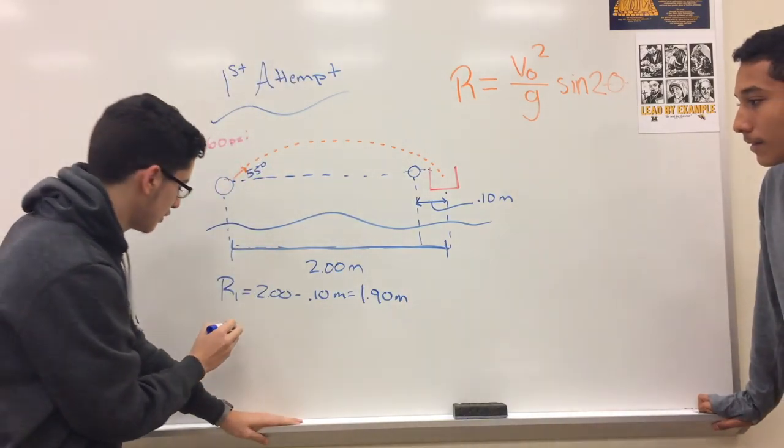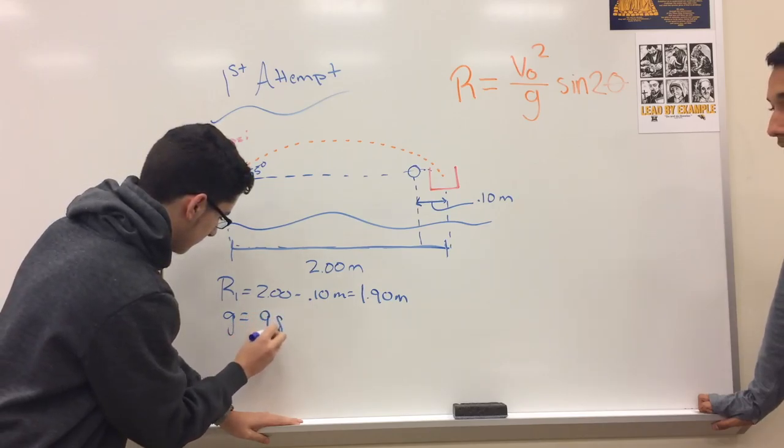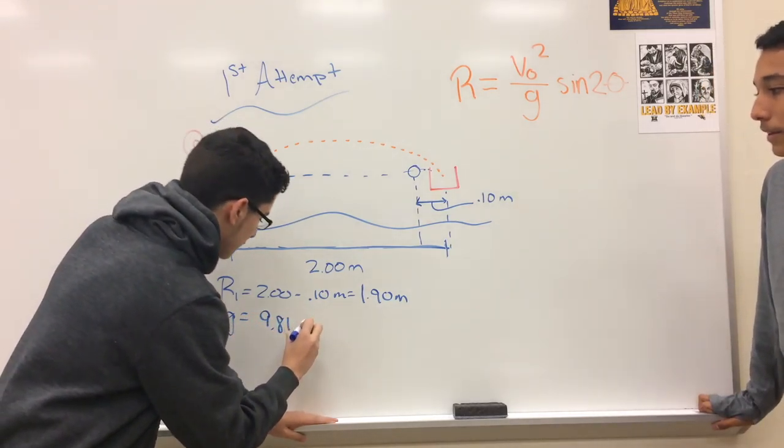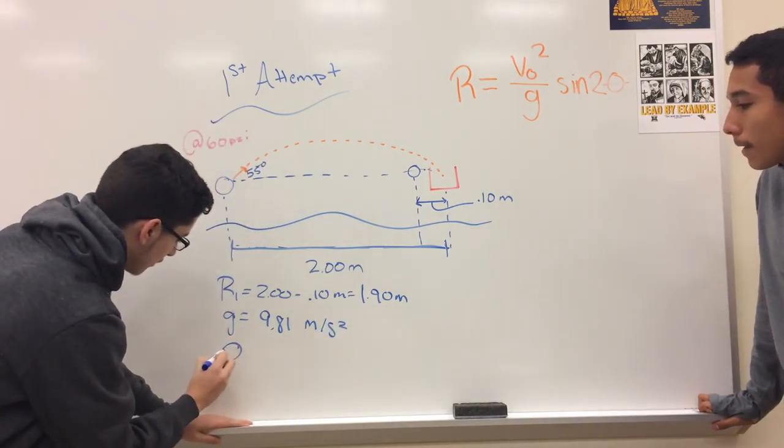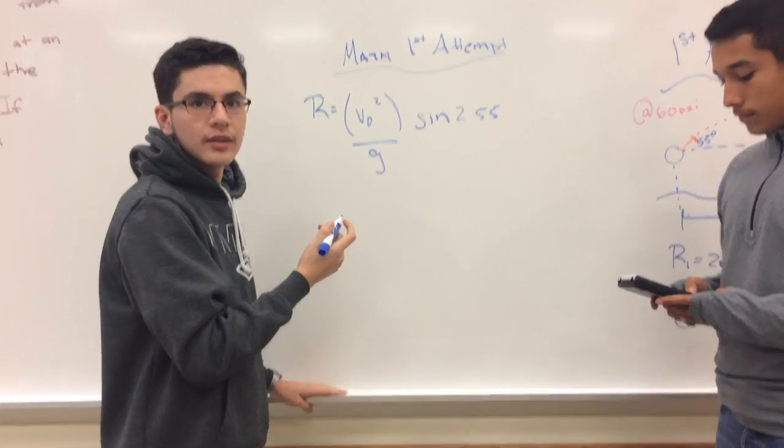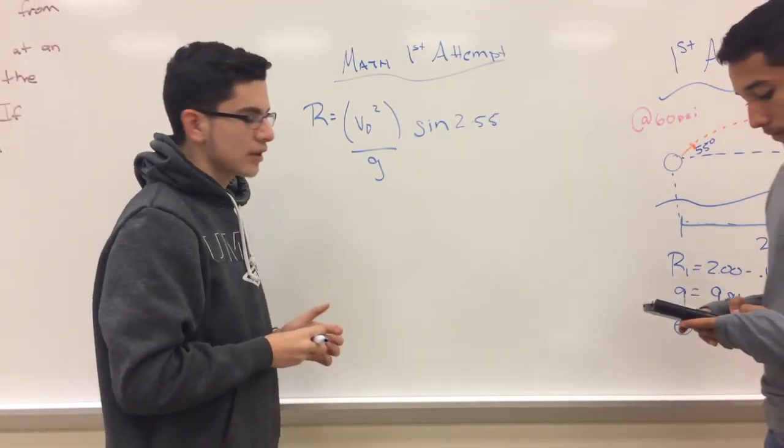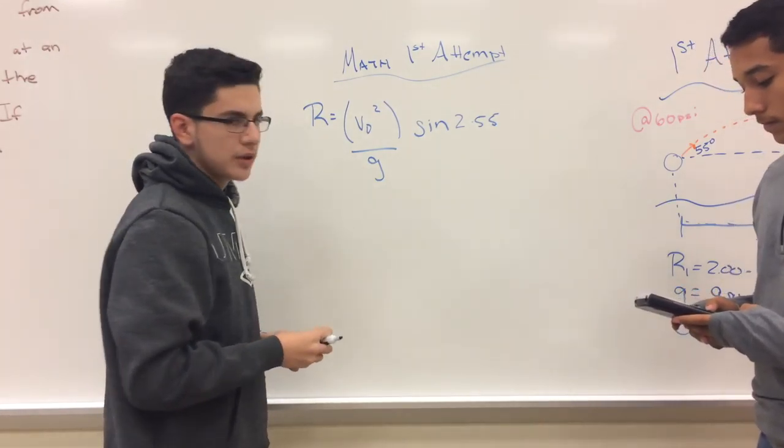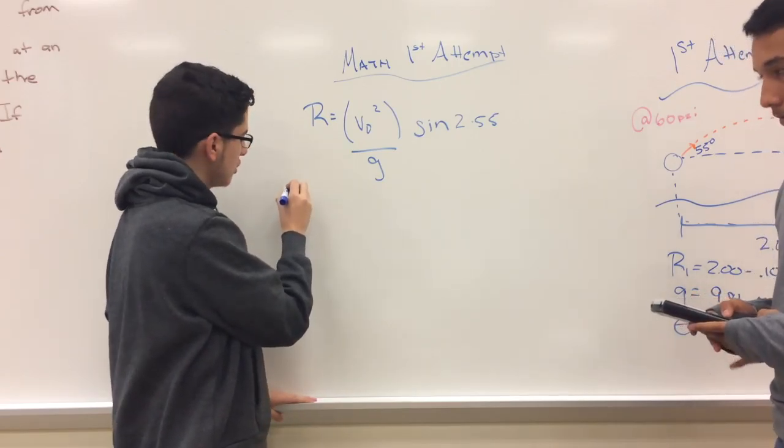So what is your g in this equation? It's positive 9.81 meters per second squared. And what is your angle that it's being launched at? 55 degrees. Okay, so since we don't know the v-naught squared value, we can rearrange this equation by multiplying by g.